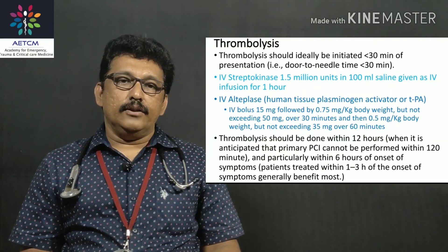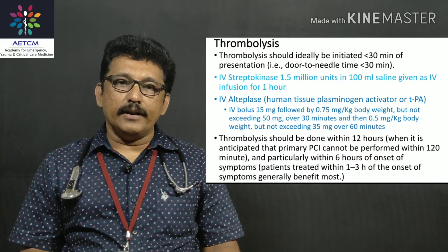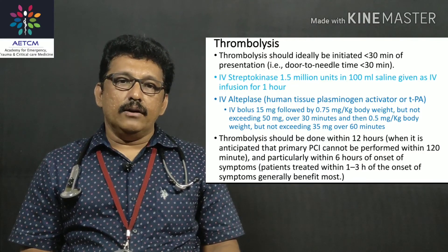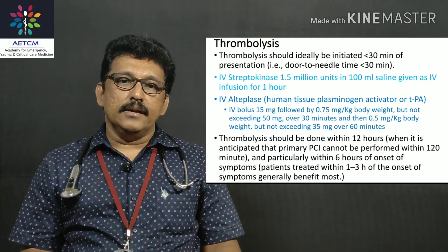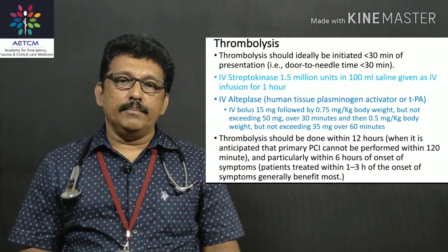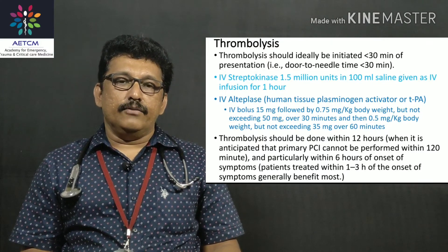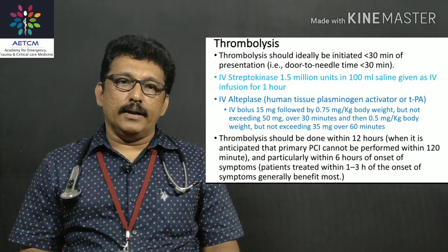Thrombolysis involves lysing the thrombus with streptokinase: 1.5 million units in 100 mL saline given over one hour. Alternatively, alteplase is given as a 15 mg bolus followed by 0.75 mg/kg body weight, not exceeding 50 mg, over 30 minutes.